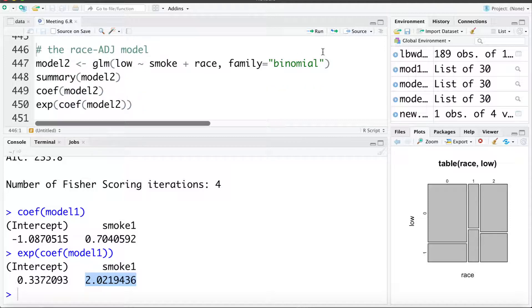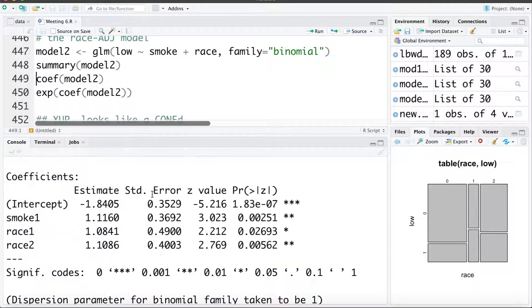Now let's take a look at what happens when we adjust for race. I'm going to fit a model 2 where I include smoking and race. Let's take a look at a summary of that model. Now we can see the smoking coefficient went from about 0.70 unadjusted to 1.11 when we adjust for smoking. So quite a large change. There's no magic rule for how much change we should see, it's a bit subjective, but I'd say this is subjectively a big change from 0.70 to 1.11.